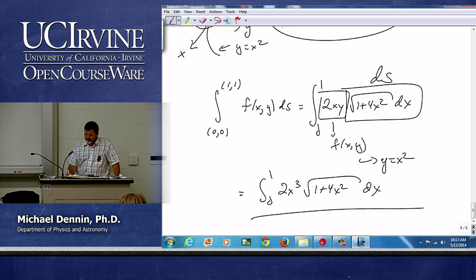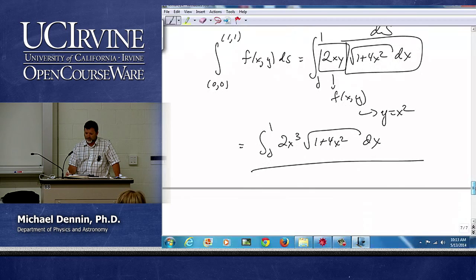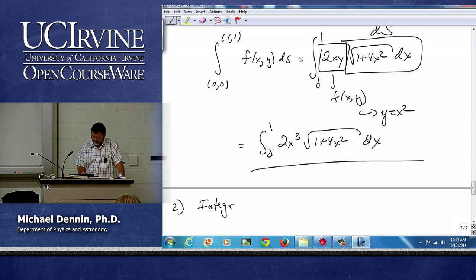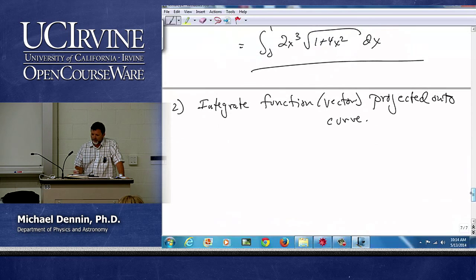Now, I want to highlight very quickly the difference between that and something that's conceptually the same, but now we're going to integrate the function, which is a vector function, projected onto the curve. Any immediate guess why that might be a little bit different to begin with?